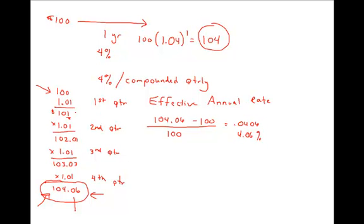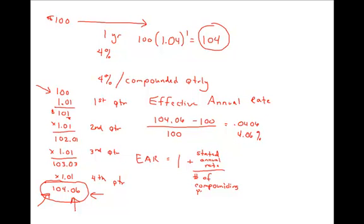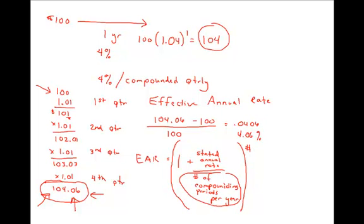But to calculate this effective rate, I had to figure out the ending dollar value. There's actually an easier way. I can calculate the effective annual rate using this equation. I take 1 plus the stated annual rate — in this case that's 4% — but then I break down that rate into its periodic rate. So I divide by the number of compounding periods per year, which would be 4. And then I take that amount and raise it by the number of compounding periods per year. Then subtract 1. So this denominator and this exponent would be identical.